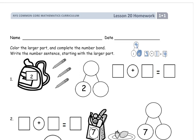Welcome to the homework of first grade, Module one, this is lesson 20. Write your name right here. And then after that we're going to work on number sentences. Color the larger part and complete the number bond. Then write the number sentence starting with the larger part.